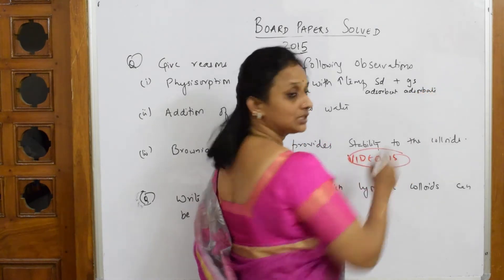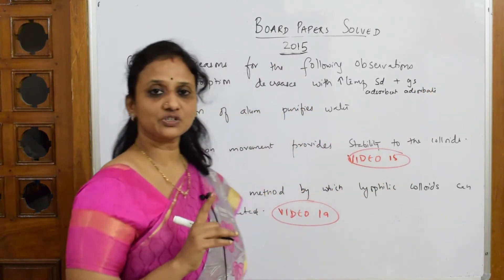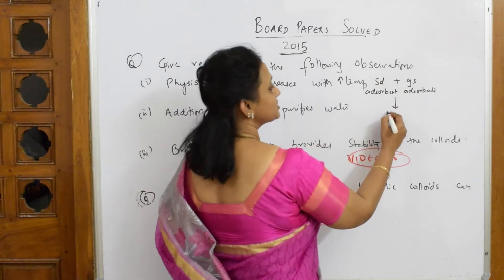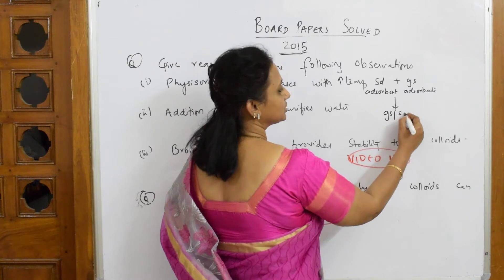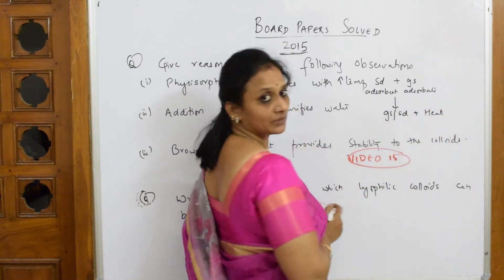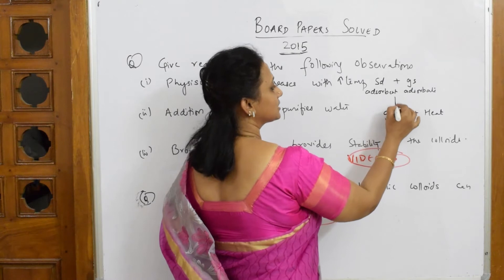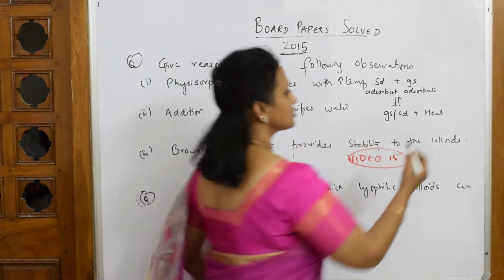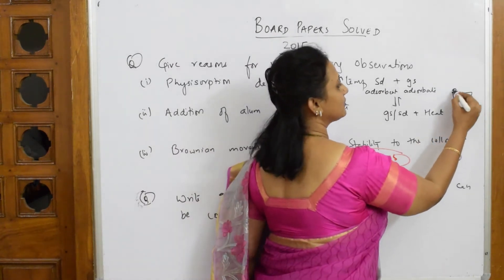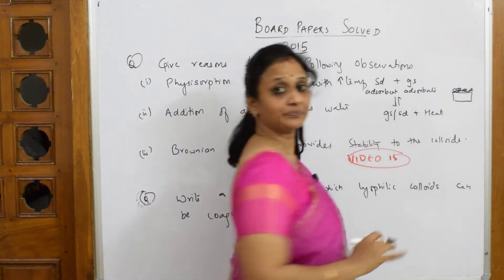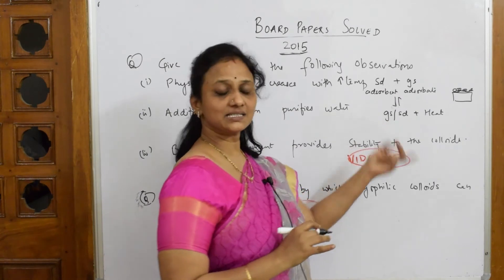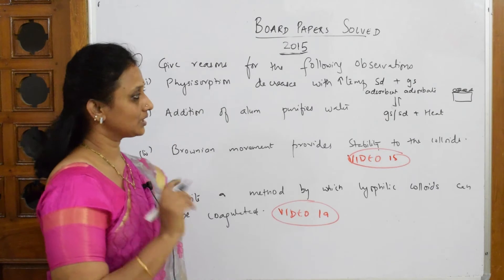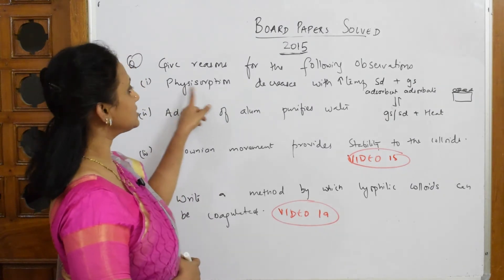When the gas goes onto the surface of the adsorbent, it gets adsorbed and forms gas on the surface: solid plus gas, and a lot of heat is released. This reaction is in equilibrium. On the surface of the solid you have gas which has adsorbed — this attachment is called adsorption.